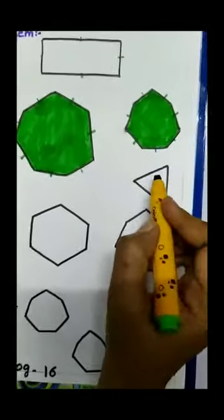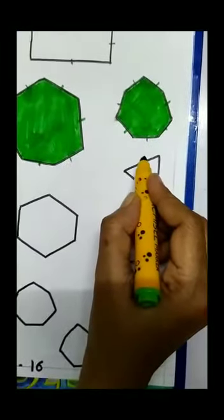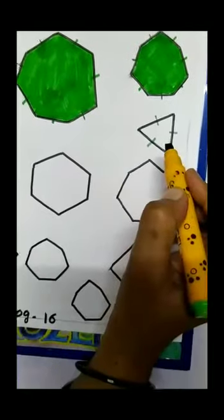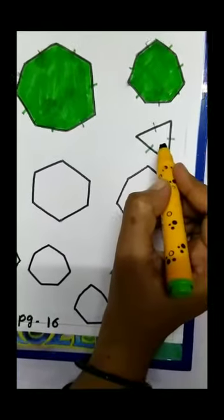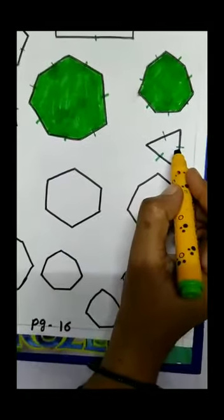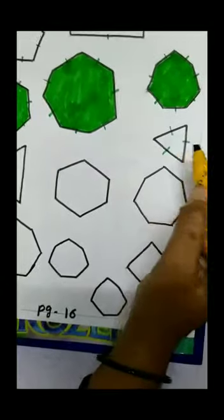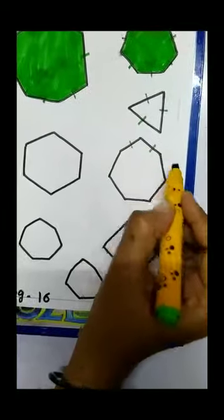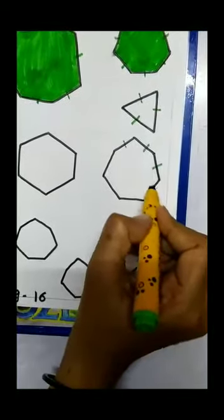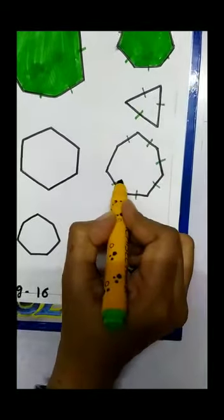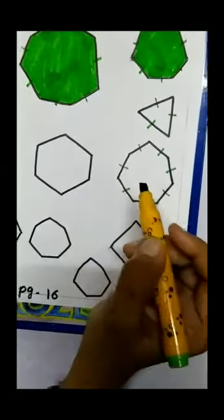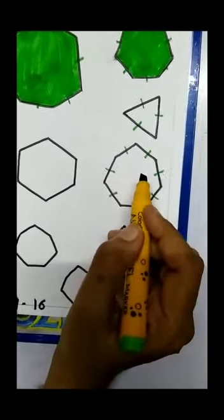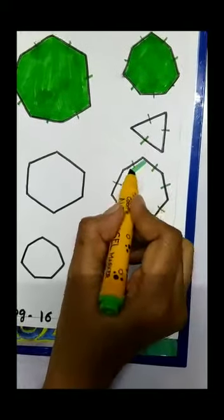Now we will count this image — 1, 2, 3. How many sides? Three sides. It means it's a triangle, so we will not color it. Then the next image — 1, 2, 3, 4, 5, 6, 7. It has seven sides, so this is a heptagon and we will color this shape.